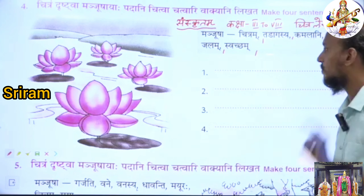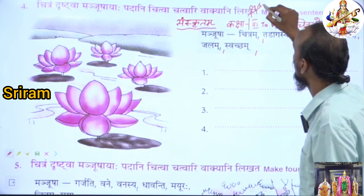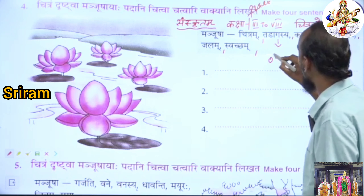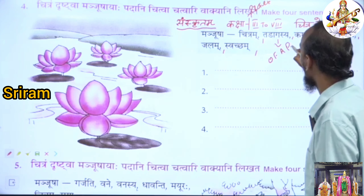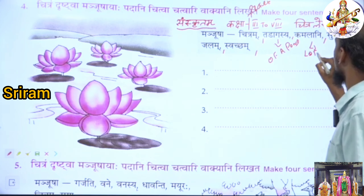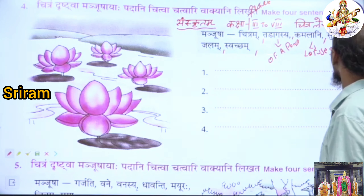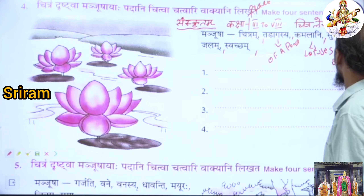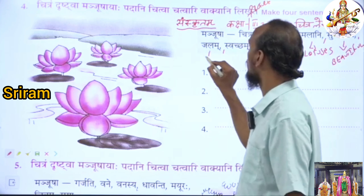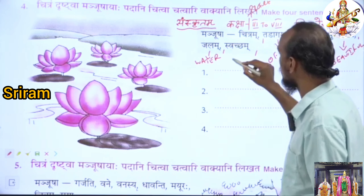Chitram means picture. Tadagasya means of a pond. Kamalani means lotuses. Sundarani means beautiful. Jalam means water. Swacham means clean.